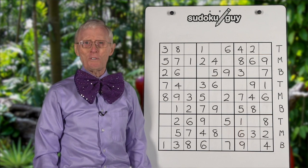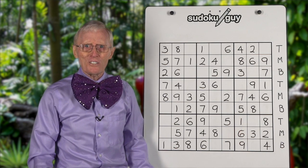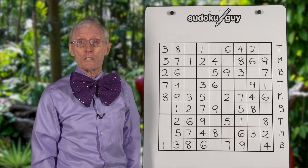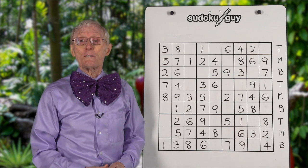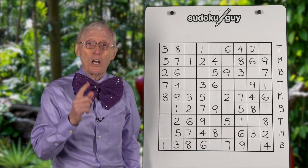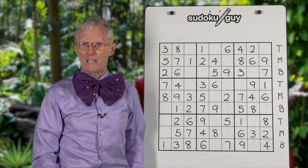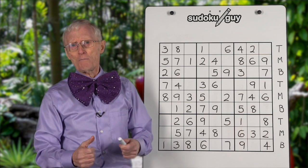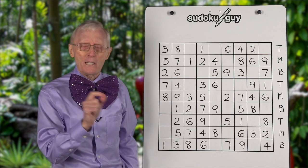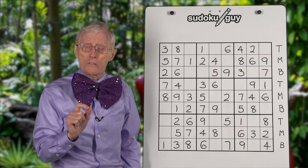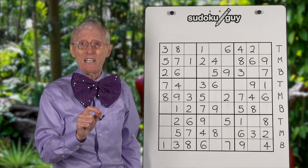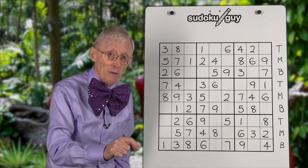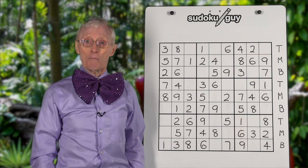Hello boys and girls. Robin the Sudoku Guy back again to show you a little bit more about Sudoku puzzles. Today we're going to do a Sudoku puzzle where we're just going to use TMB — top, middle and bottom — plus RAM. RAM is short for ramifications, and basically what it means is: when you put a number in, always look to see if that number helps you get another number.